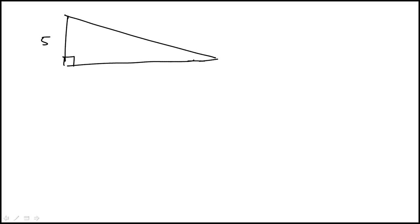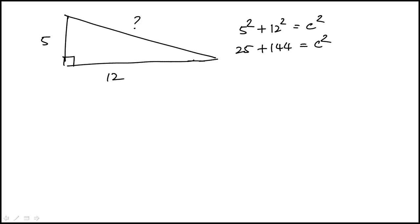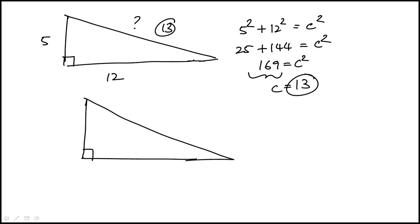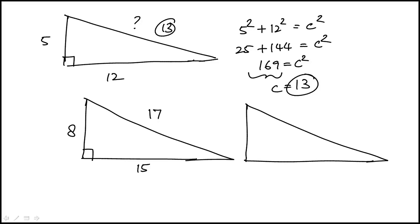The second most common is the 5-12-13 triangle: 5 squared plus 12 squared equals 25 plus 144 equals 169, and the square root of 169 is 13. Other less common but exam-relevant triples are 8-15-17 and 7-24-25. These are popular with test writers because they involve nice whole integers.